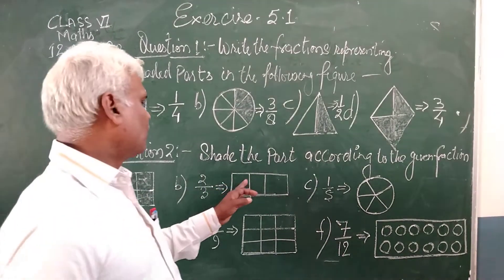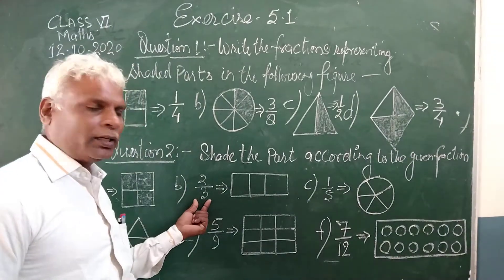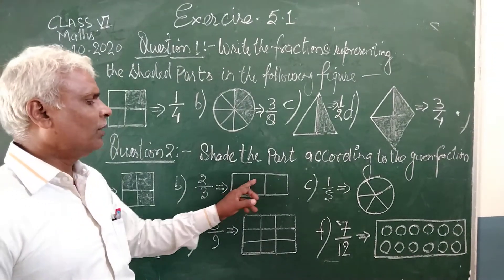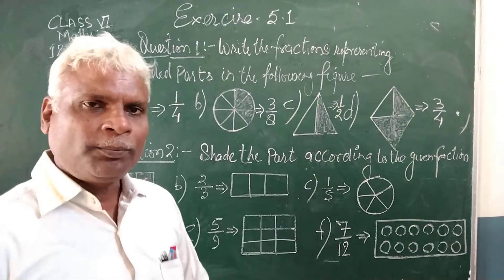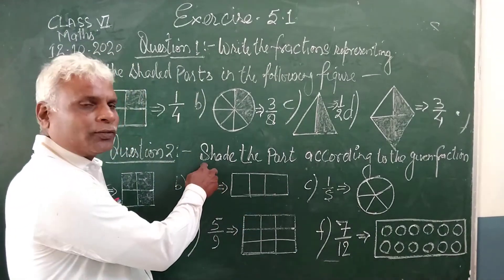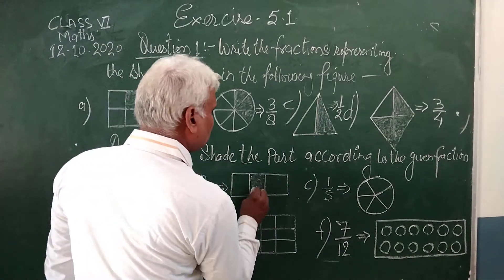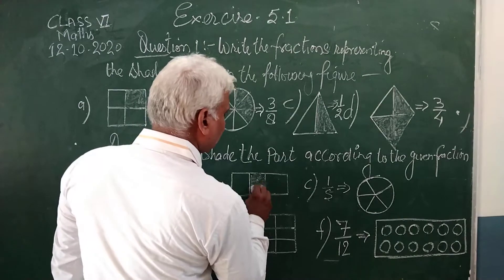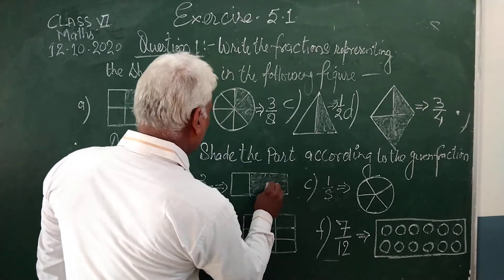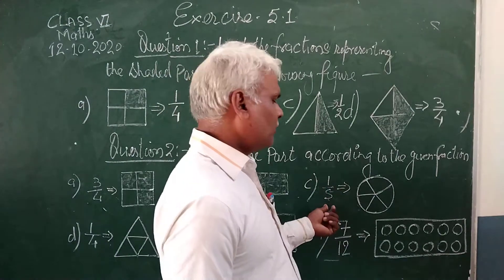And here is 1, 2, 3 — denominator 3. This figure is divided into 3 parts. All parts total 3. 2 parts are shaded. Then the first part and the second part — these 2 parts are shaded.